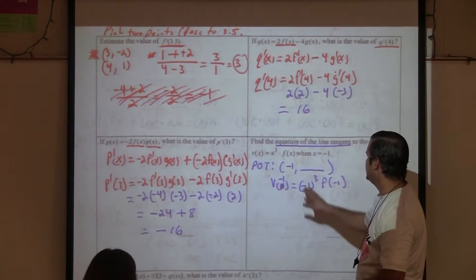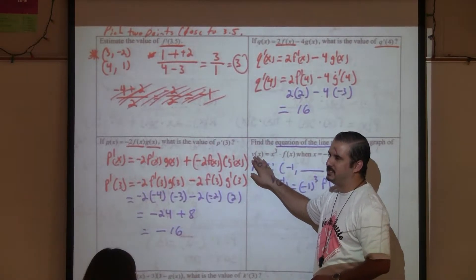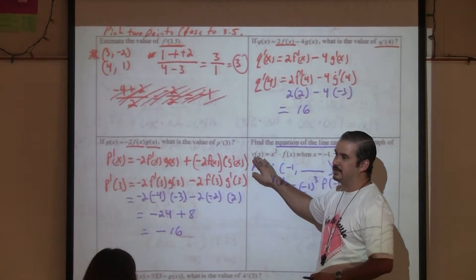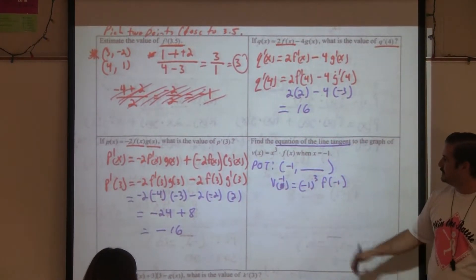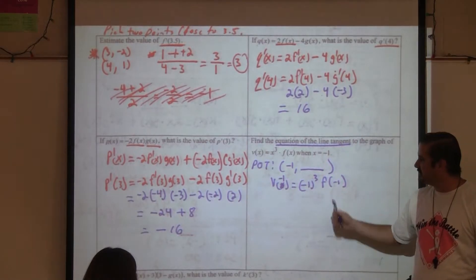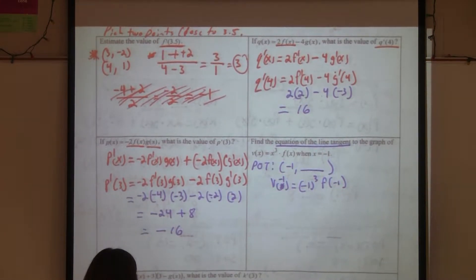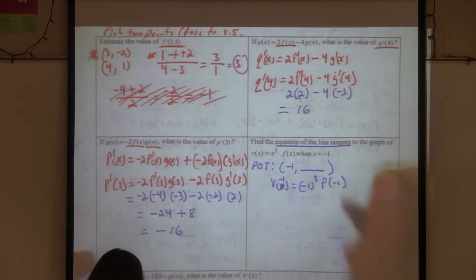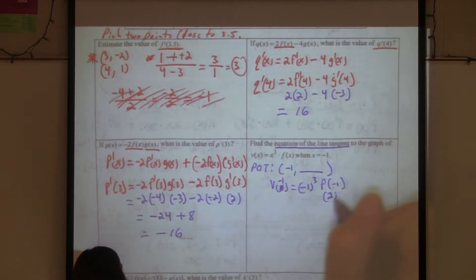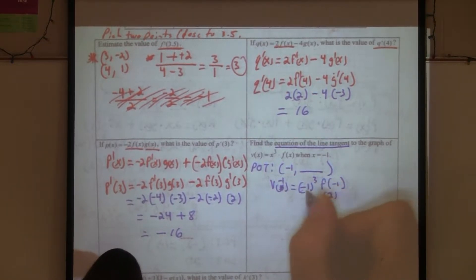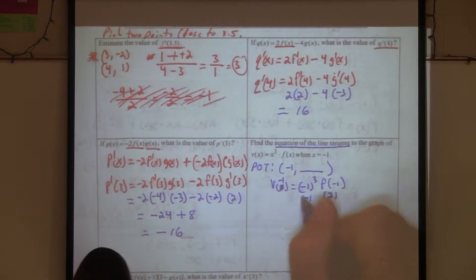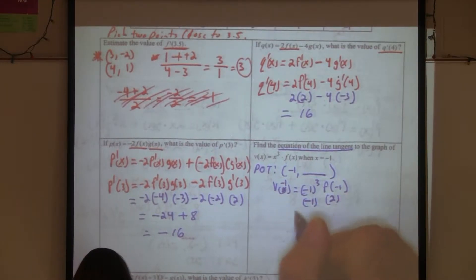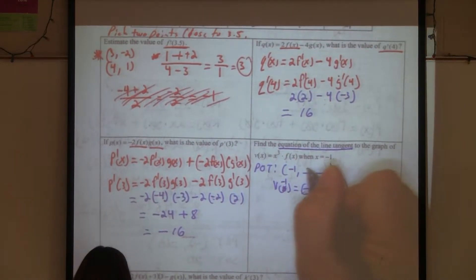The table doesn't tell us v — it tells us f and g. So f of negative one is two, and negative one to the third is negative one. In reality, v of negative one equals negative two. Be careful — the original table doesn't give us anything about v directly.